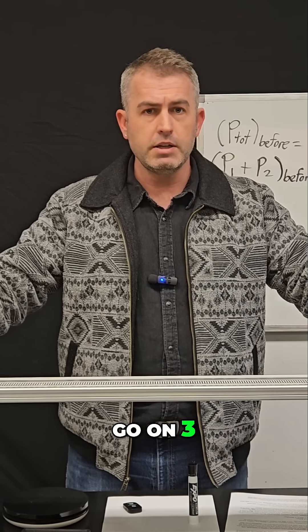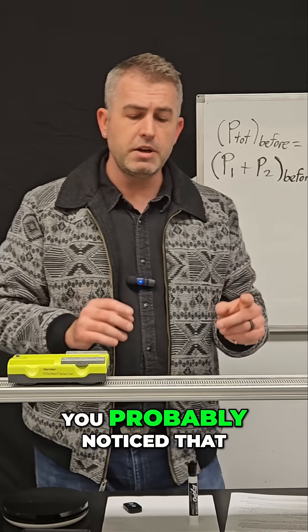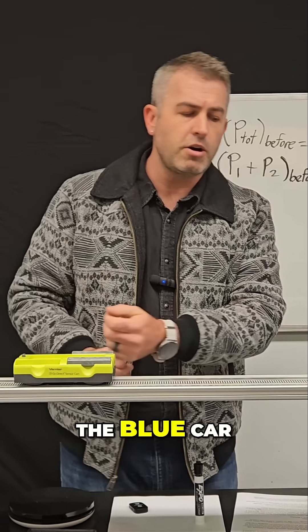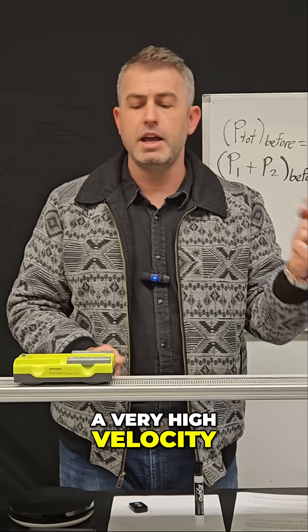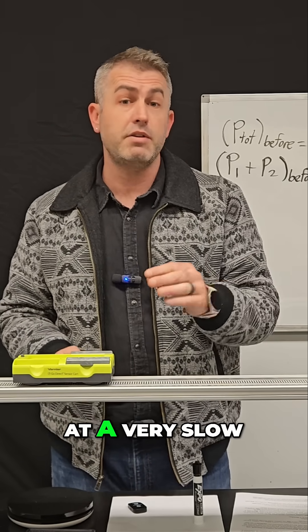Here we go on three, two, one, go. You probably noticed that after the collision the blue car shoots off at a very high velocity and the yellow car moves backwards at a very slow velocity.